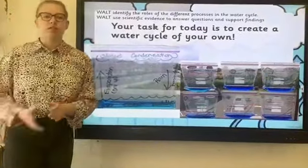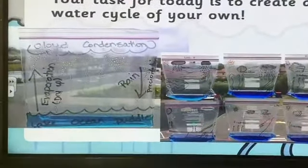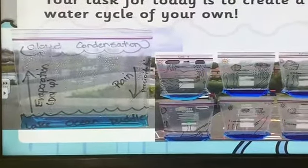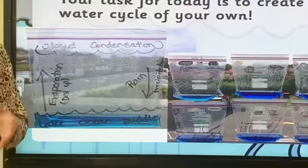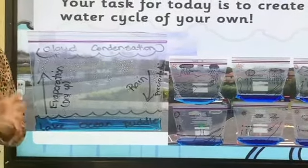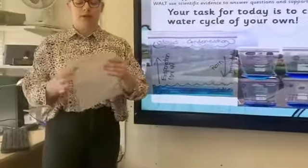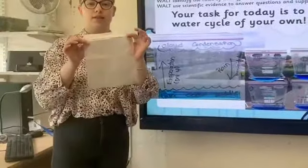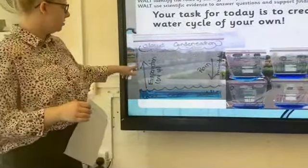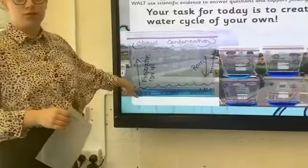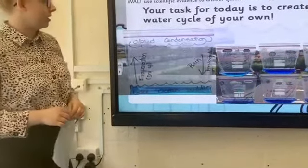Okay, so your task for today is to create your own water cycle. Now I know you're thinking how is that going to work, but it's very, very simple. All you are going to need is a sandwich bag, a marker, some water, and a blue dye if you are able to get it.